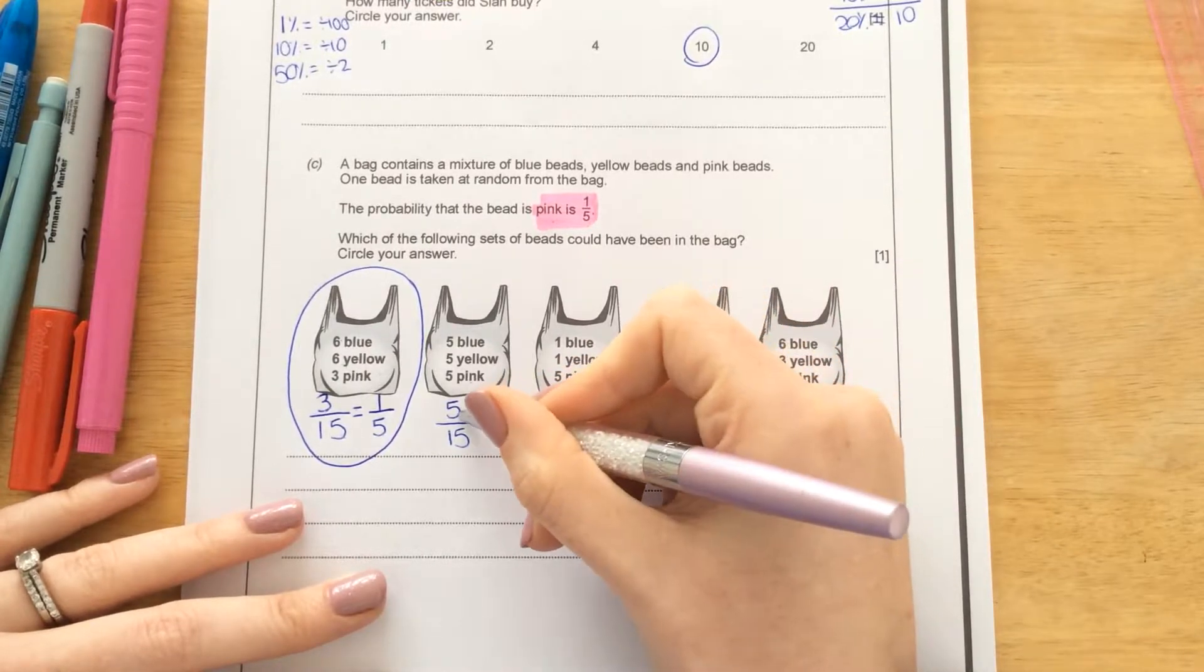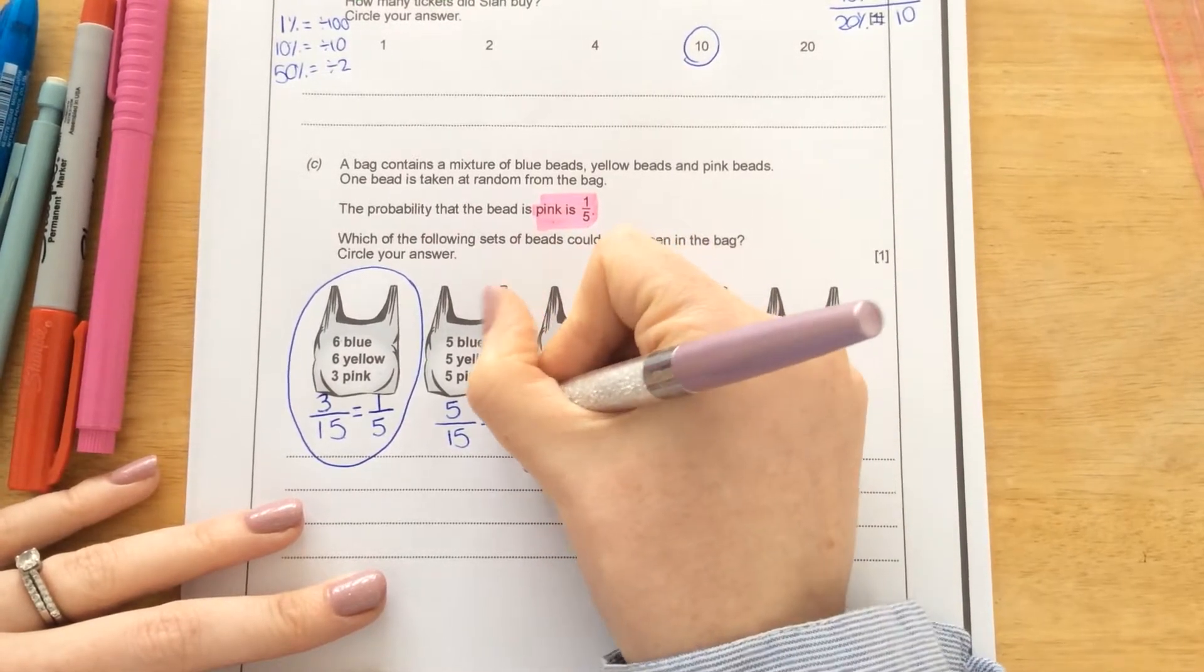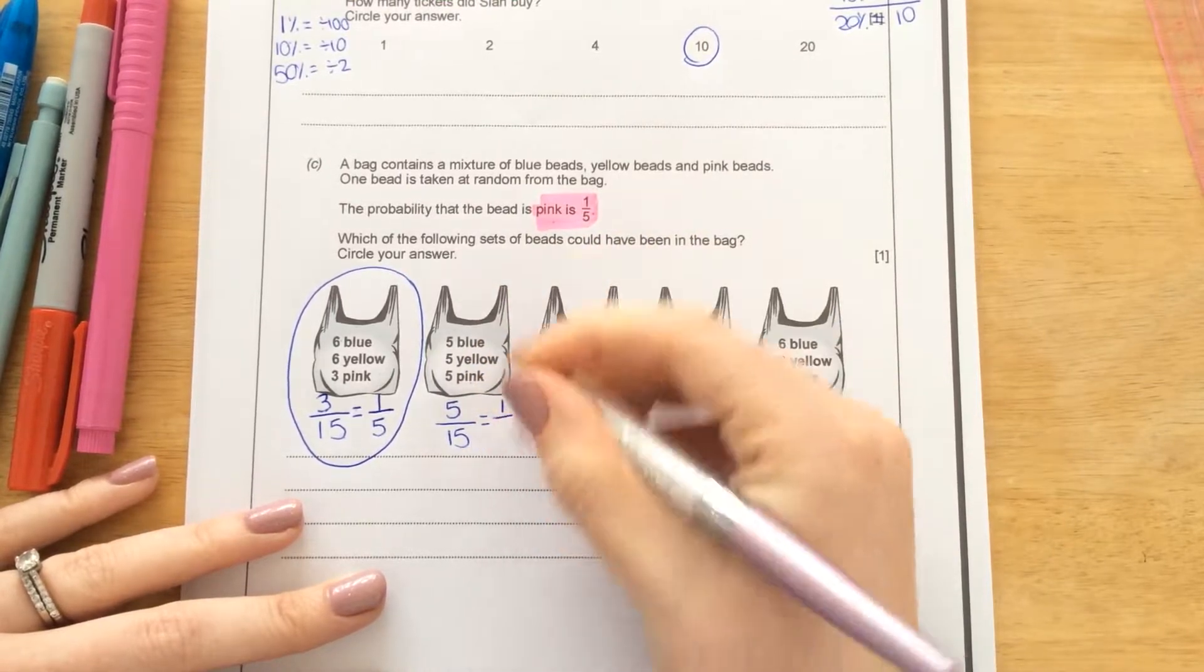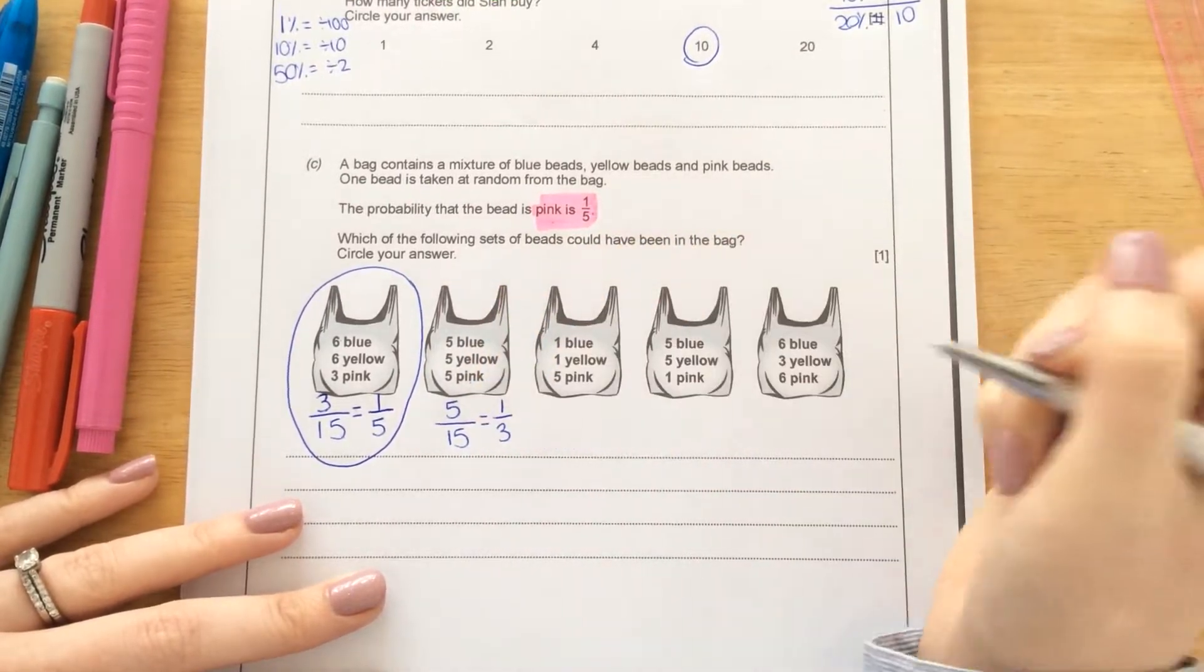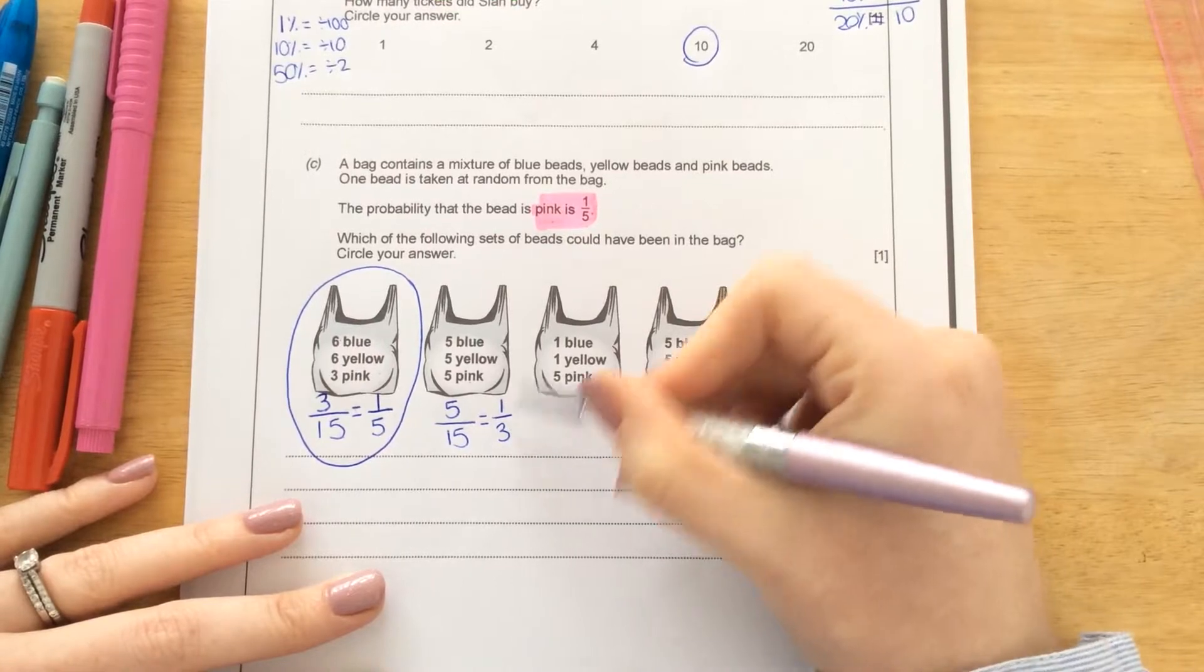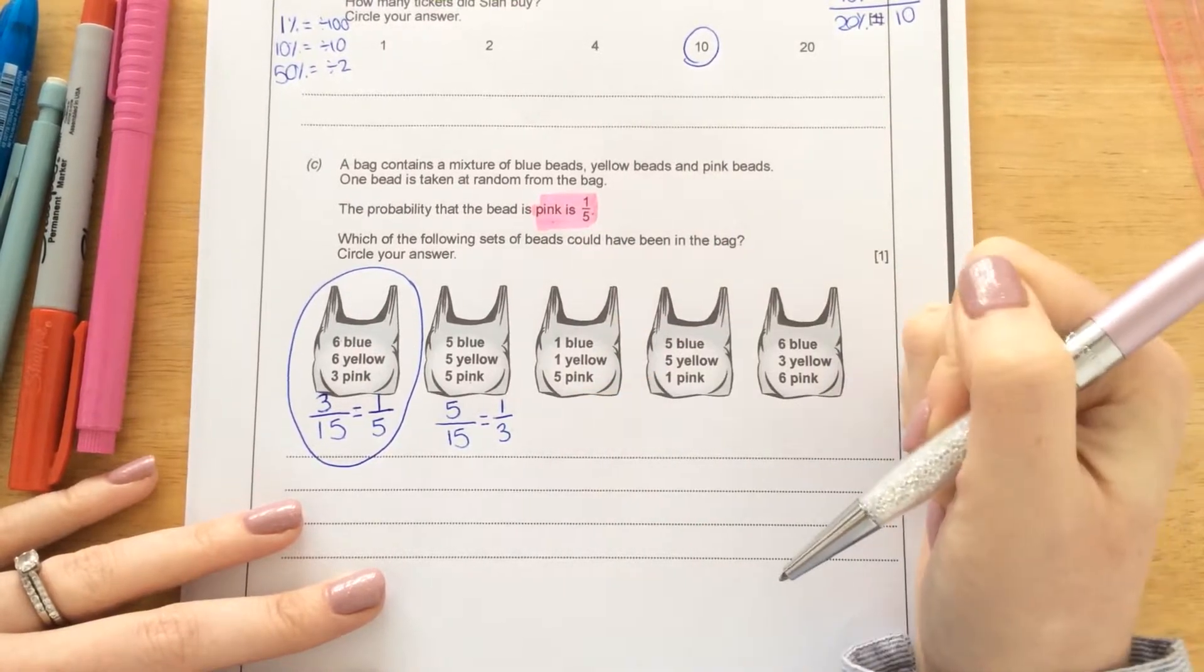That's nice and easy because they both end in a 5. They must be in the 5 times table. So how many times does 5 go into 5? Once. How many times does 5 go into 15? 3 times. So that's not equivalent to 1 fifth. That's actually 1 third.